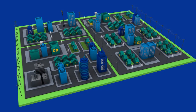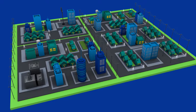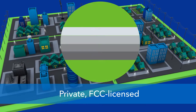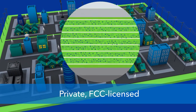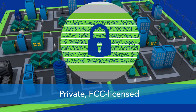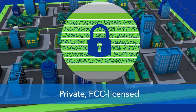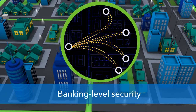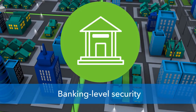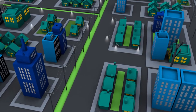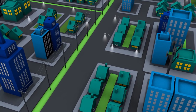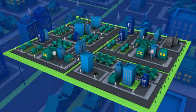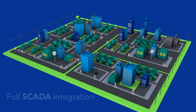A robust distribution automation or DA solution is dependent on having infrastructure that delivers real-world tested performance. The FlexNet communication network uses private FCC licensed radio frequency optimized for data. Commands are transmitted over a point-to-multipoint network using banking-level security protocols on dedicated channels, giving you peace of mind, dependability, and unparalleled performance.